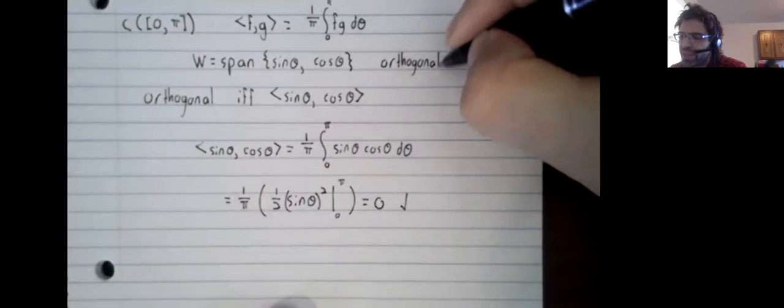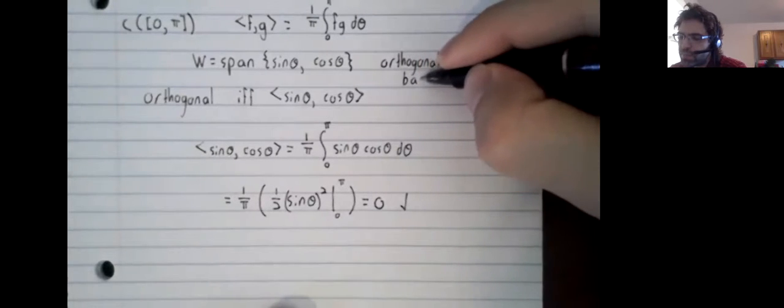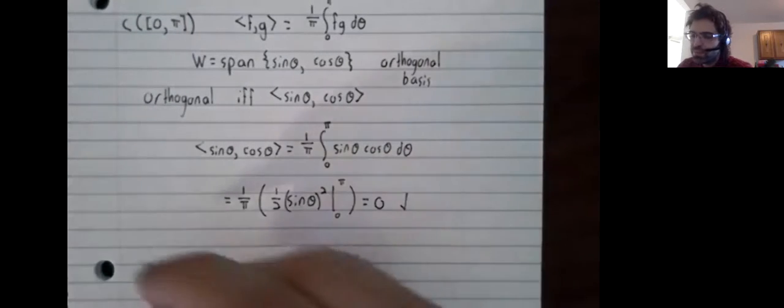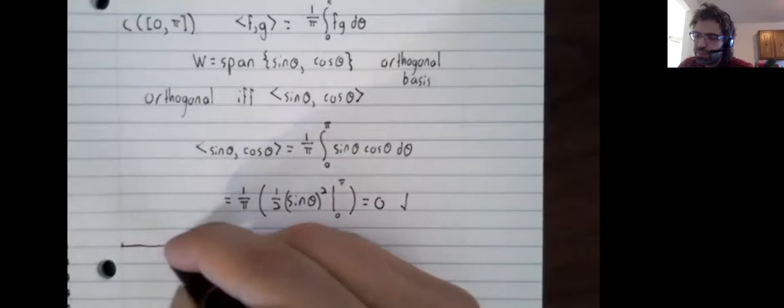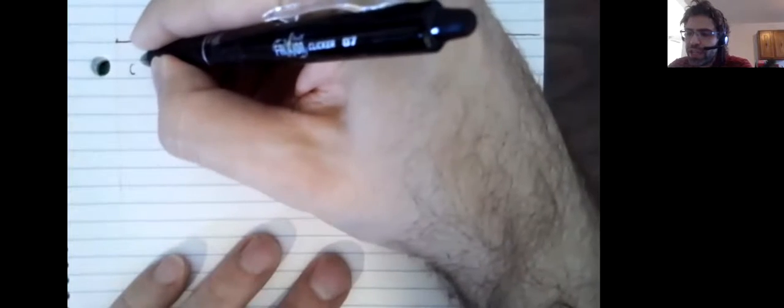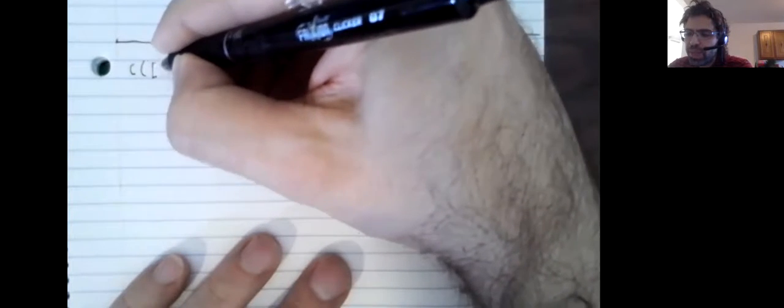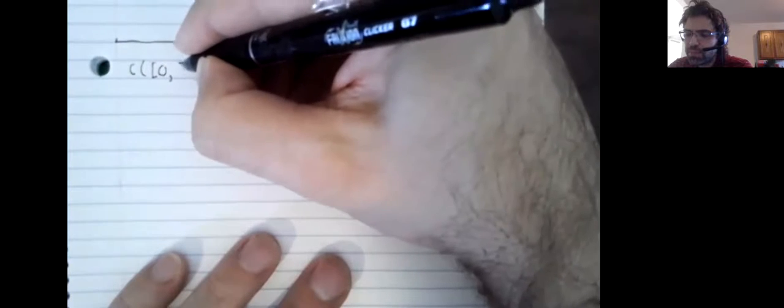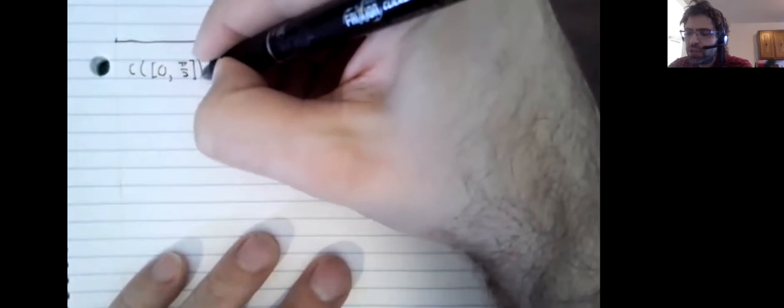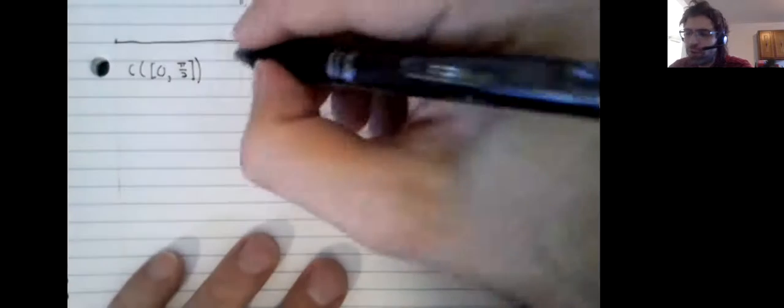And we have an orthogonal basis. What if we change our space? Now it's from zero to pi over two.